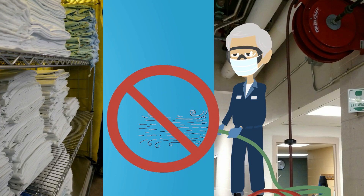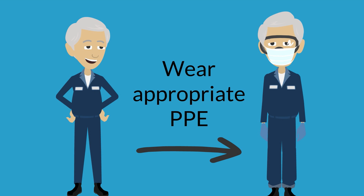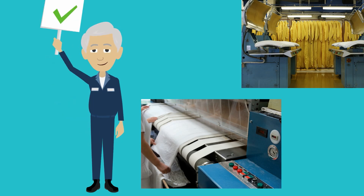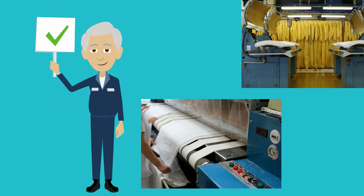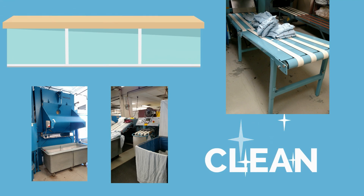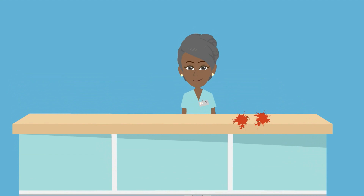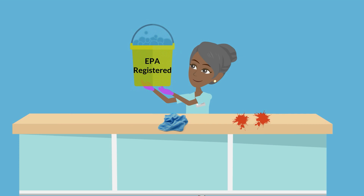Only perform the blow-down process when items are not being treated in that area, and do not use the blow-down process in packing areas. Ensure that workers wear appropriate PPE while cleaning. Perform the blow-down process in the drying and ironing areas more frequently than other areas, depending on the volume of lint produced. Be sure to follow your facility's specific procedure for this task. Keep all working surfaces, including counters, benches, and tables clean of visible soil, dust, and lint. Immediately decontaminate all working areas that become contaminated with blood or other potentially infectious materials with EPA-registered hospital-grade disinfectant.